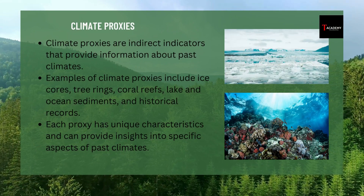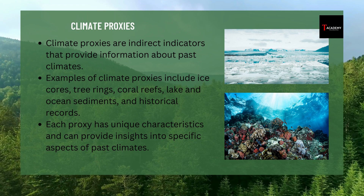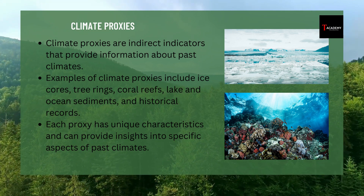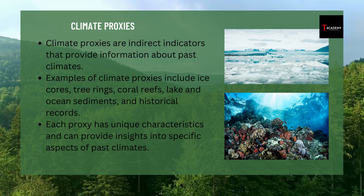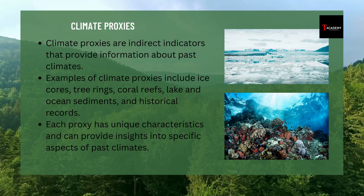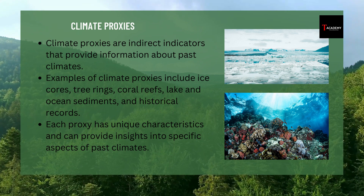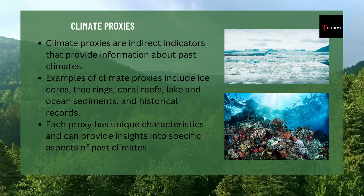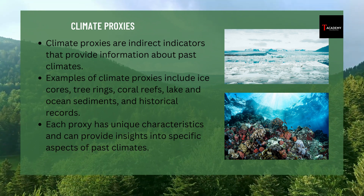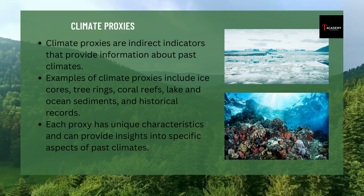Climate proxies provide valuable clues about past climates. Ice cores extracted from glaciers reveal information about temperature and greenhouse gas concentrations. Tree rings help us understand variations in temperature and precipitation. Coral reefs preserve records of sea surface temperatures. Sediment cores from lakes and oceans offer insights into past climate conditions. Even historical records provide glimpses into weather observations and agricultural records.